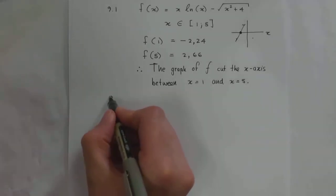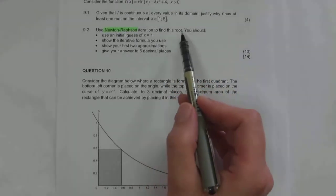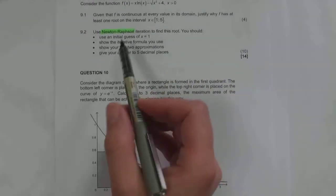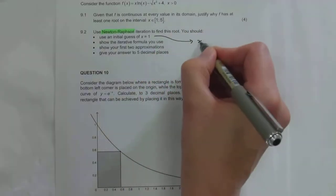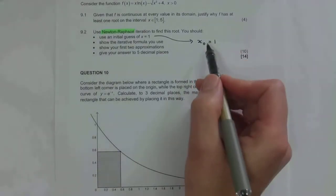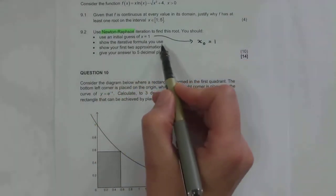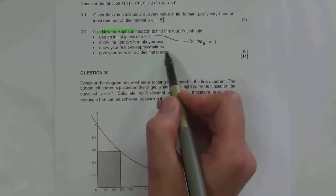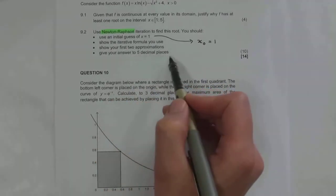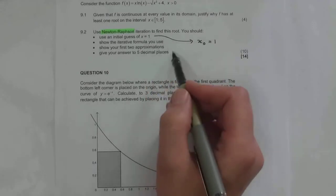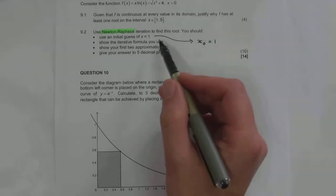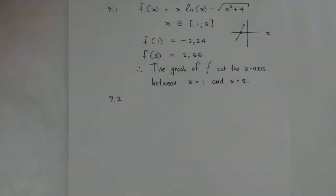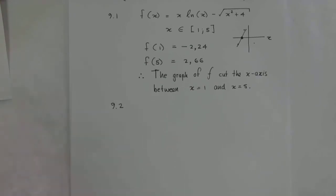Now for 9.2, it says: use the Newton-Raphson iteration to find this particular root. Use an initial guess of x₀ = 1. Show the iterative formula you use, show your first two approximations, and give your answer correct to five decimal places. So I'm going to use this as a checklist. In order to use the Newton-Raphson iteration, I need to find the derivative of that function, and this is why this question involves the derivative of ln(x).